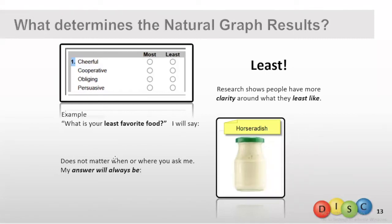So, no matter when or where you ask me, my answer would always be horseradish. So, least is constant, doesn't change, and that's what determines our natural style.